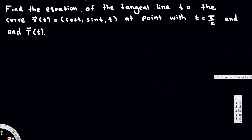Let's start with the tangent line to the curve. Here we have the function r(t) = ⟨cos t, sin t, t⟩. In order to express the tangent line we need a point and a tangent vector. The value t = 5π/2 is given.